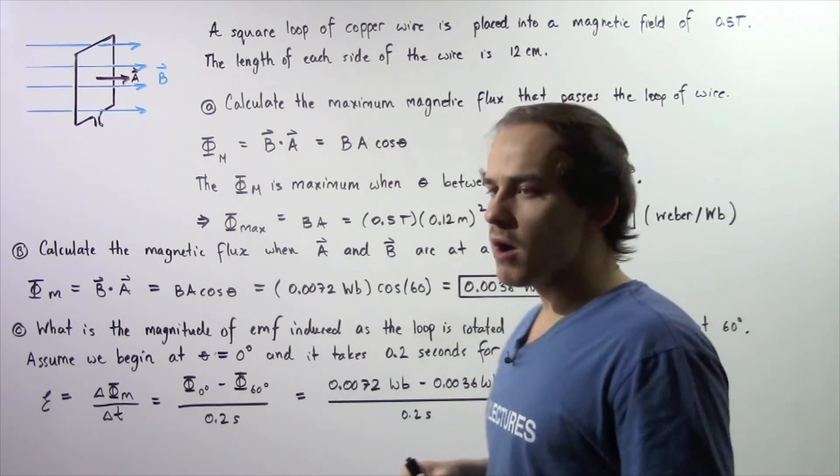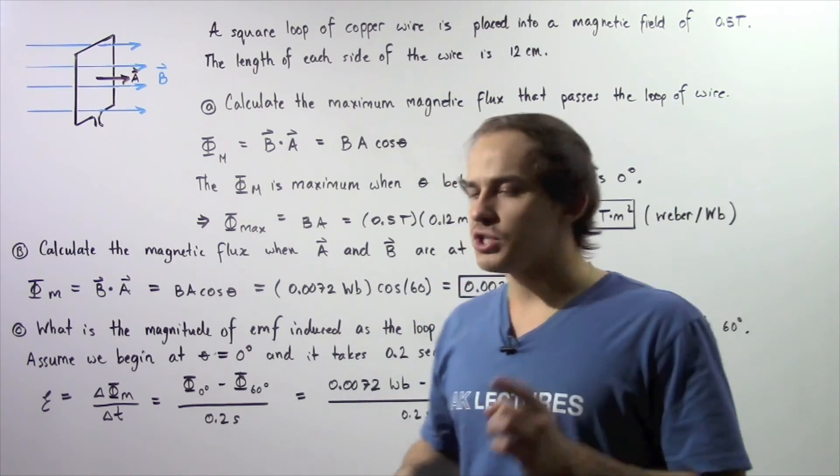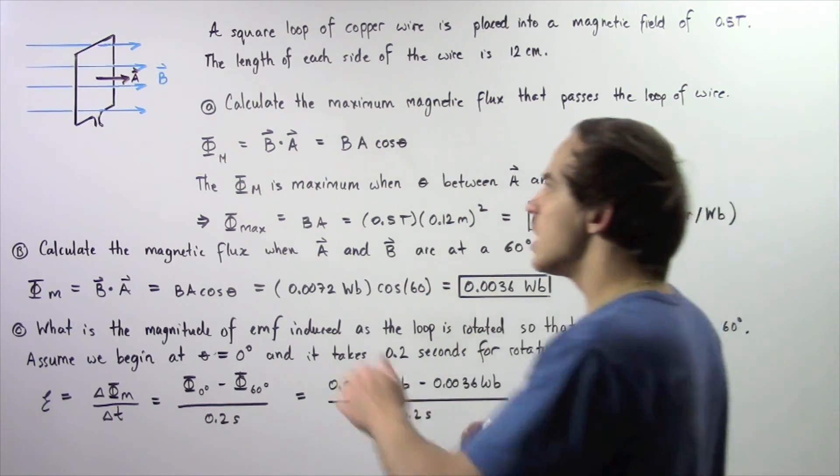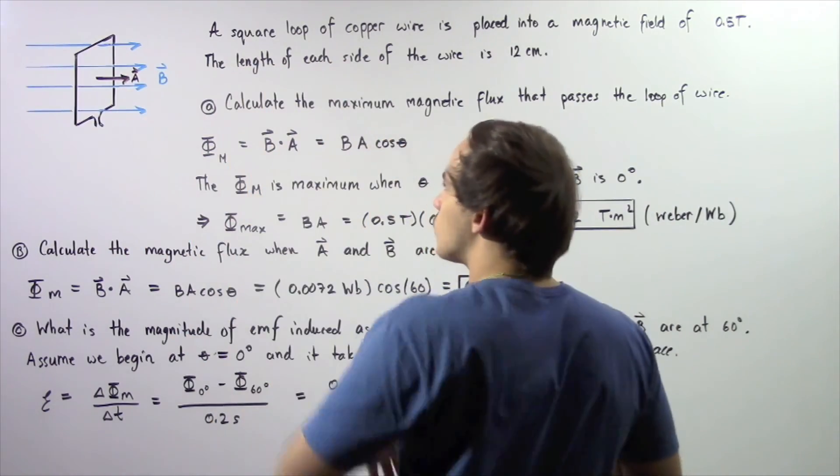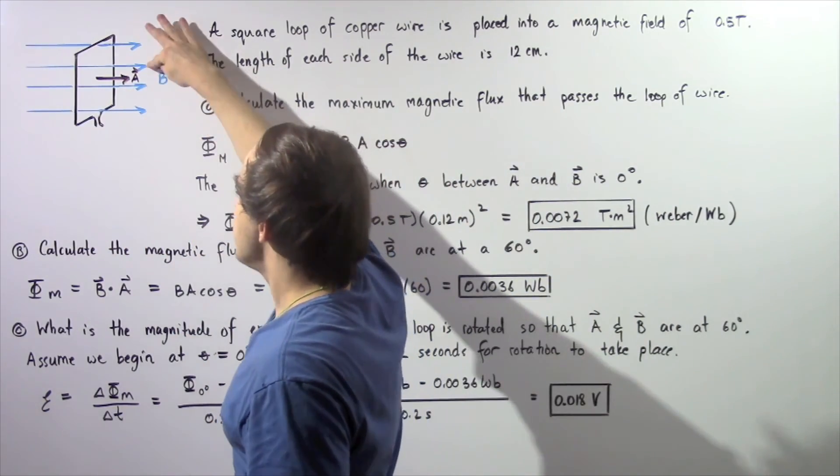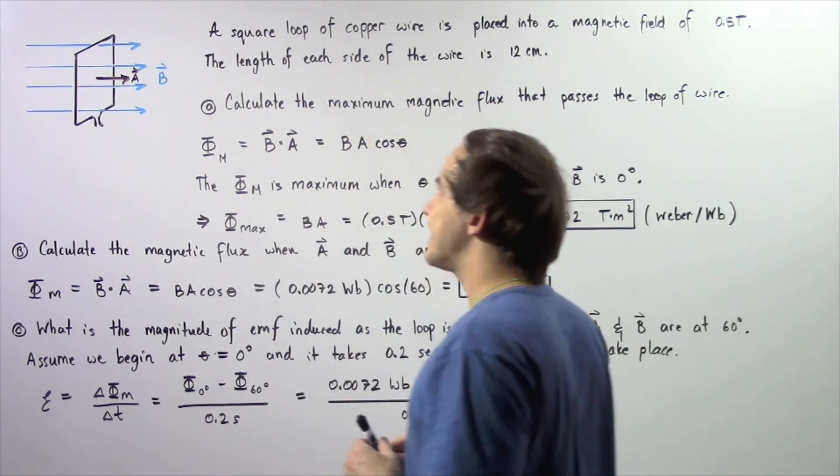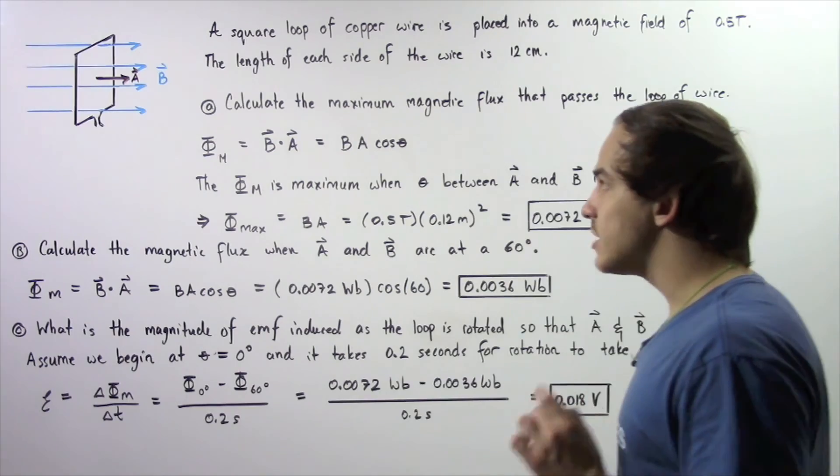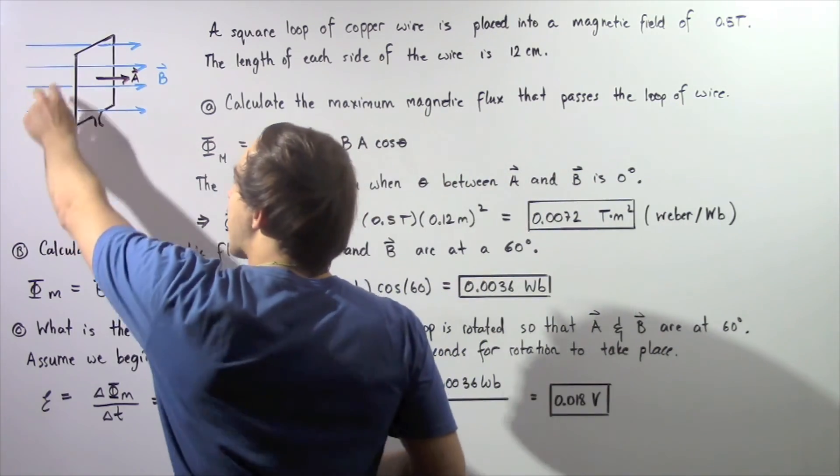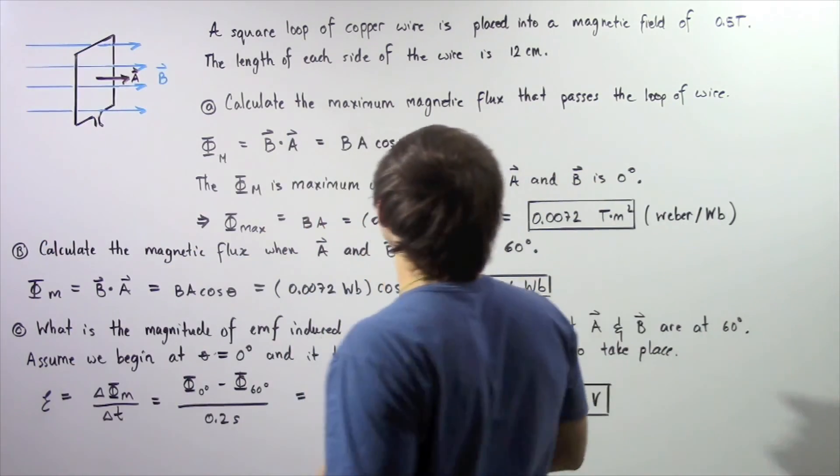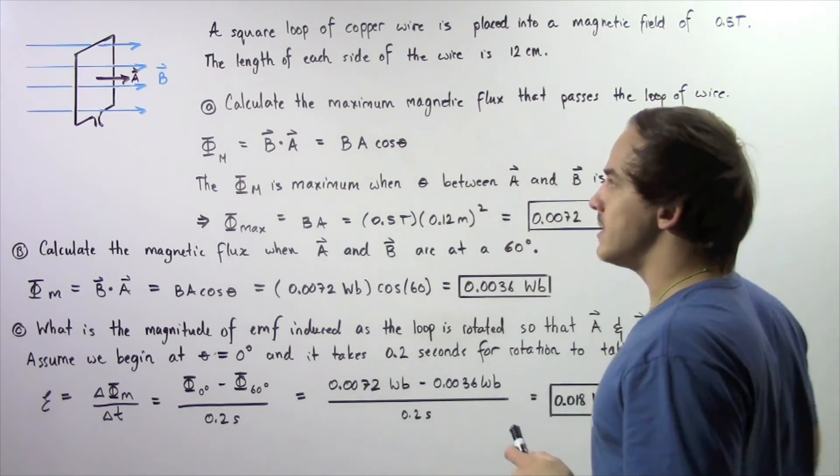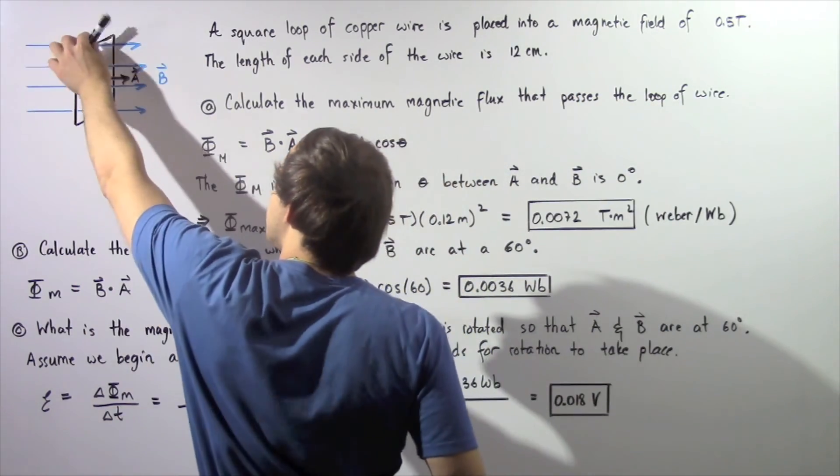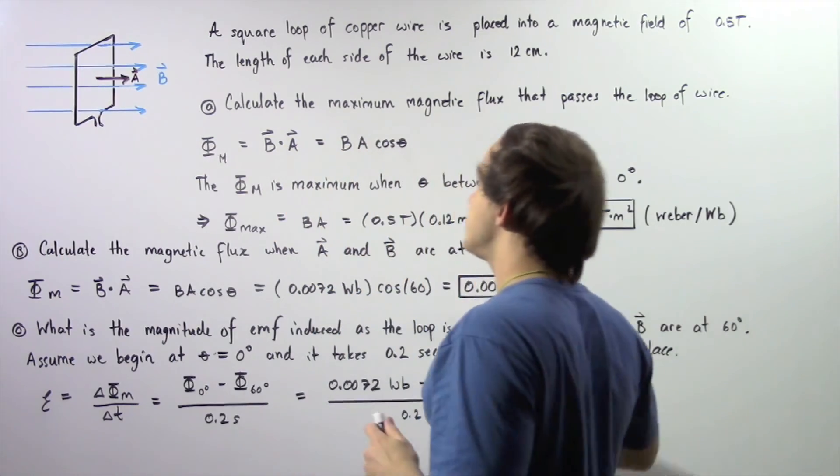Suppose a square loop of copper wire is placed into a magnetic field of 0.5 teslas which points in a positive direction along the x-axis, as shown by the following blue magnetic field lines. Now suppose the length of each side of our copper wire is given to be 12 cm. So because we have a square, that means each one of these lengths is exactly the same, equal to 12 cm.